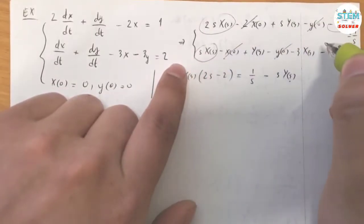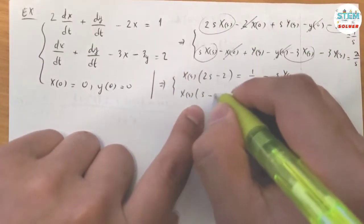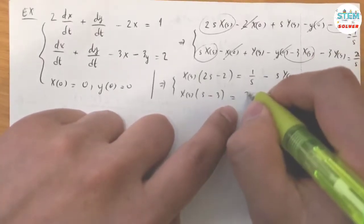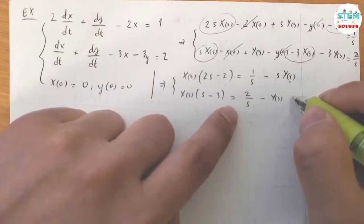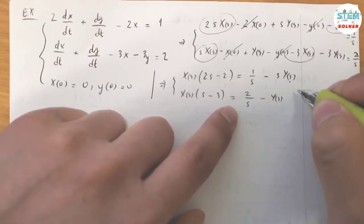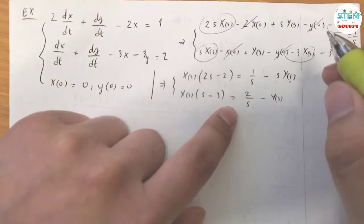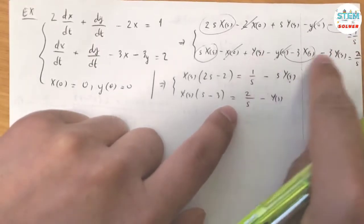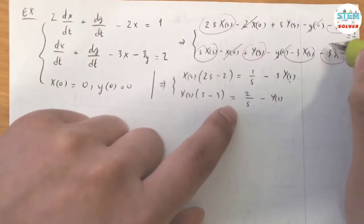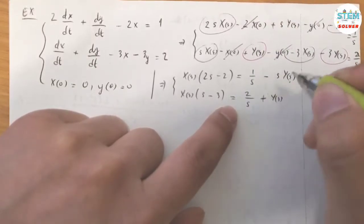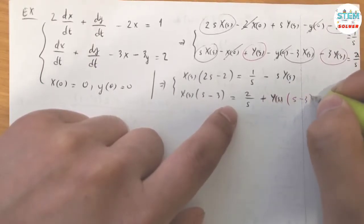For the second equation, factor out capital X(S) to get (S minus 3)·X(S) plus capital Y(S) times (S minus 3). Combine those Y(S) terms together to get the factored form.